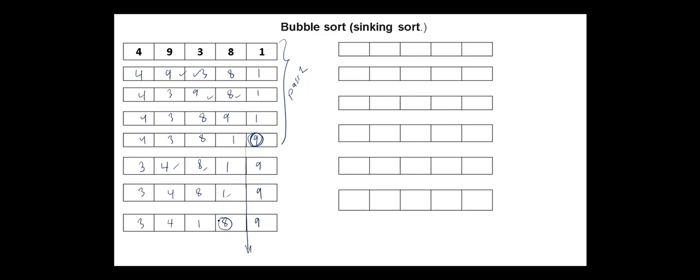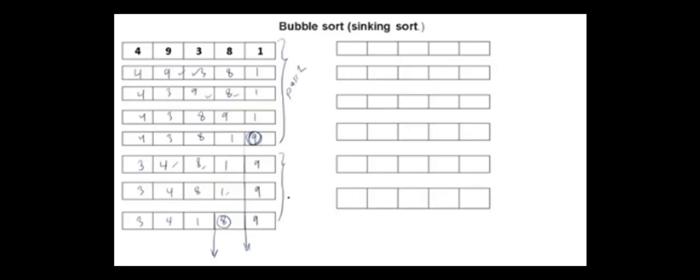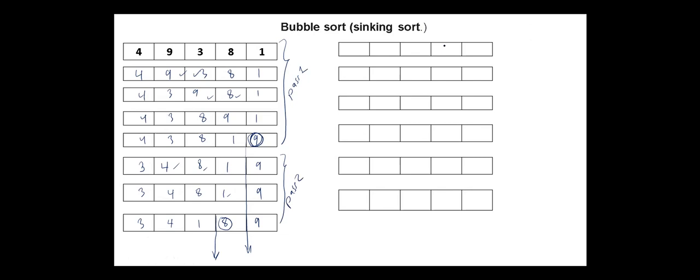Again, we have the largest value here, and we do not need to include it in the next passes. So we have here 8, 9, 3, 4, 1.